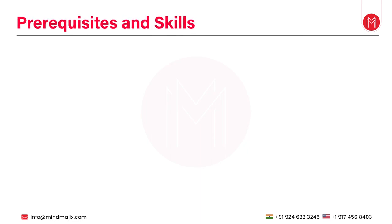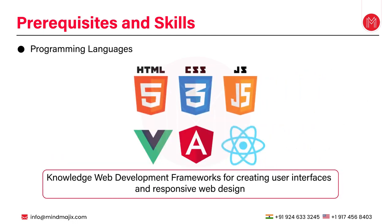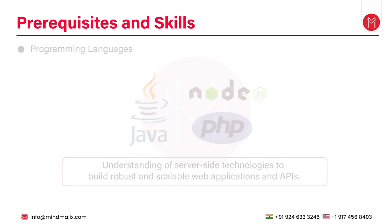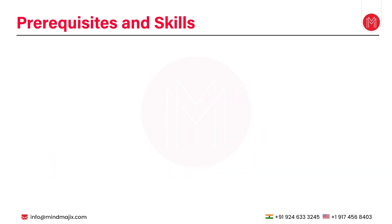To become a full stack developer you will need the following technical skills. First, programming language proficiency in multiple languages such as JavaScript, Python, and Java to handle both front-end and back-end development. Next, front-end development knowledge of HTML, CSS, and JavaScript frameworks like React, Angular, or Vue.js for creating user interfaces and responsive web design is a must. You also need back-end development understanding of server-side technologies like Node.js, PHP, or Java to build robust and scalable web applications and APIs.